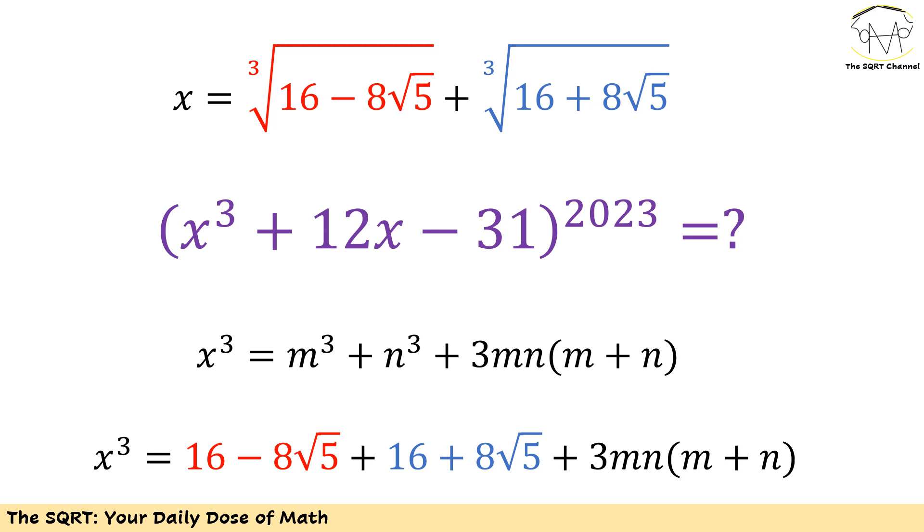Here m plus n is basically our x value. m cubed is going to be the first m to the power of 3, which is 16 minus 8 times square root of 5. On the other hand, n cubed is going to be the second term to the power of 3. We are going to have 16 plus 8 times square root of 5.